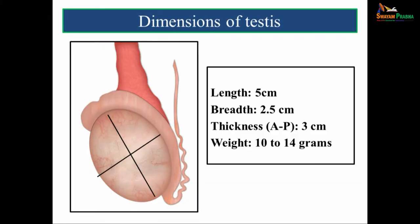Now we come back to the testes. The dimensions of the testes: the length is about 5 centimeters, the breadth is about 2.5 centimeters, and the anteroposterior thickness is about 3 centimeters. In an adult, the testes weighs about 10 to 14 grams.